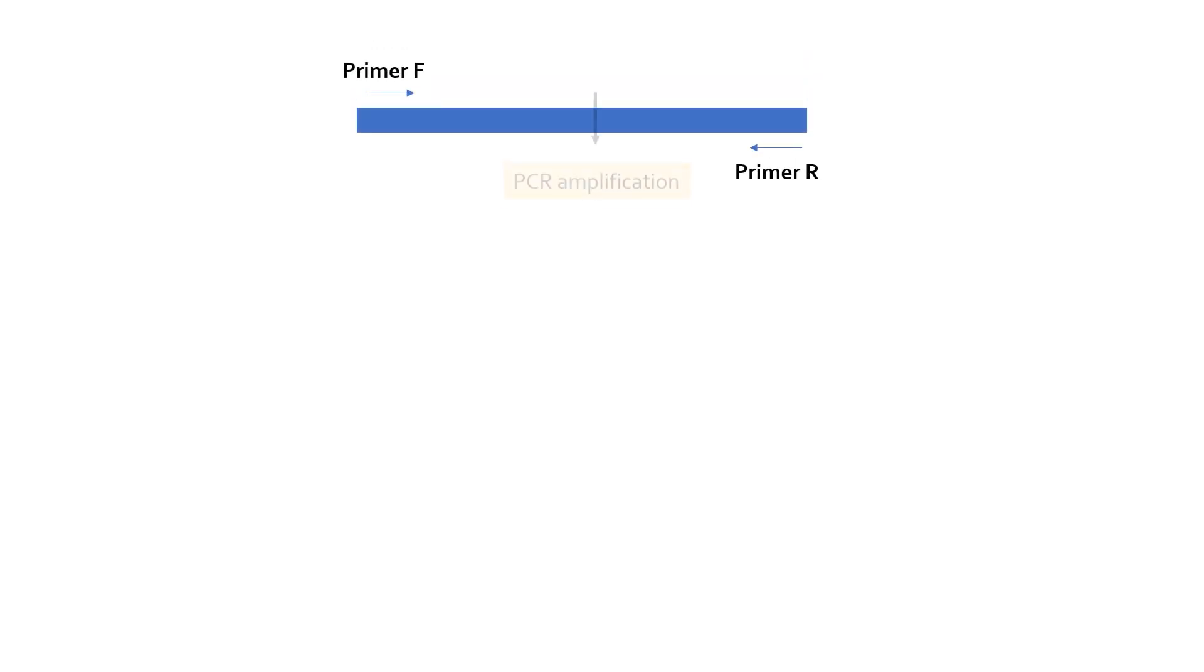Normally, you need two primers for amplifying a specific DNA fragment or gene of interest. For designing primers for this, you must know the sequence of both the ends complementary to which you would design primers.